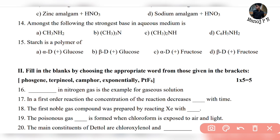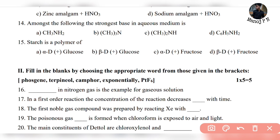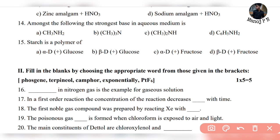Starting with the general structure, starch is built from alpha 1,4 glucose units. So the answer is alpha D glucose — simple, you will be able to answer that.